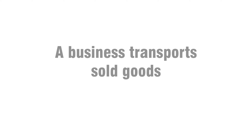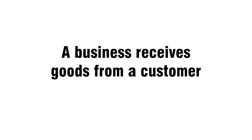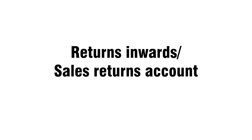Activity nine: a business transports sold goods. Carriage outwards account. Activity ten: a business receives goods from a customer. Returns inwards, sales returns account.